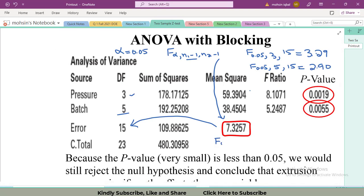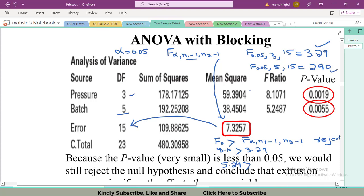My rejection criteria is that if F statistic value is greater than F of alpha N1 minus 1 comma N2 minus 1, I will reject the null hypothesis. In both cases you can see that 8.10 is greater than 3.29, and 5.24 is also greater than 2.90. So in both cases we reject our null hypothesis. What does it mean? Now we will discuss it.